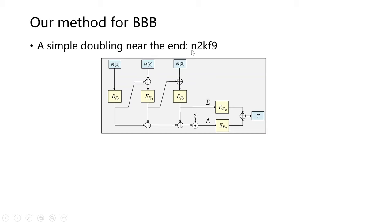Here is our proposal, n2kf9. We simply add a single doubling near the end. The single doubling can be achieved by one bit shift and one conditional XOR with some constant, which is very efficient.